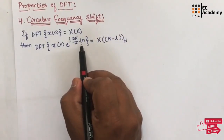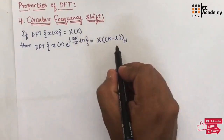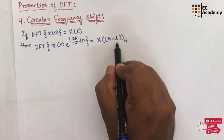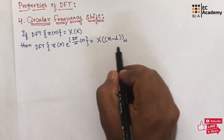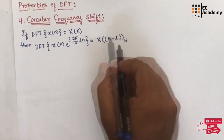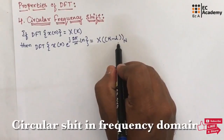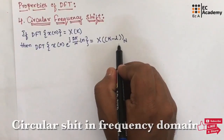It states that if we take the DFT of a time domain signal multiplied with the exponential term e to the power of j 2 pi by N into Ln, then the frequency domain signal will have a circular shift with the value of L, since in the exponential term we have taken Ln. With that value L, the x of k value will be having a circular shift.